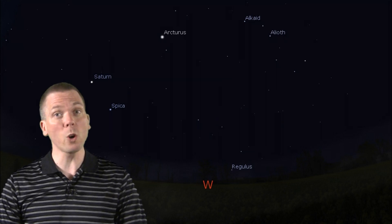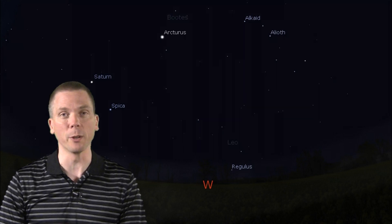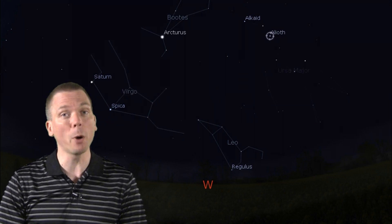Well, the constellations of spring have all rotated towards the west, and are still visible. Virgo, Leo, Bootes, even Ursa Major, which is circumpolar for many of us, has rotated towards the northwestern sky.